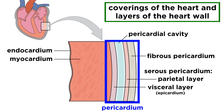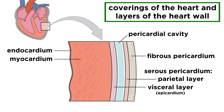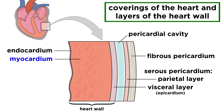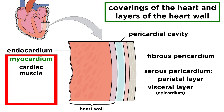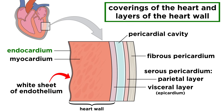The heart is covered by something called the pericardium, which is made of dense connective tissue that protects the heart and maintains its position. The two walls of the pericardium are the fibrous pericardium and the serous pericardium, the latter of which also has two layers, the parietal layer and the visceral layer, also known as the epicardium. The epicardium is considered the outermost layer of the heart wall, the others being the myocardium and endocardium. The myocardium makes up most of the heart, and it is made largely of cardiac muscle. The rest is made of connective tissue fibers that form a dense network called the cardiac skeleton, providing structural support and insulating the electrical activity. The endocardium is a white sheet of endothelium that sits on some more connective tissue, and this lines the heart chambers.